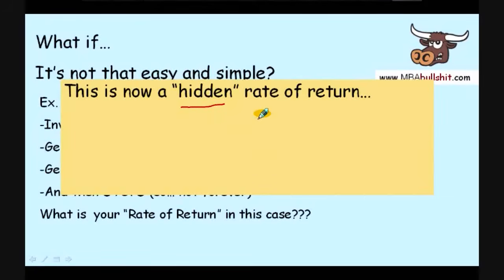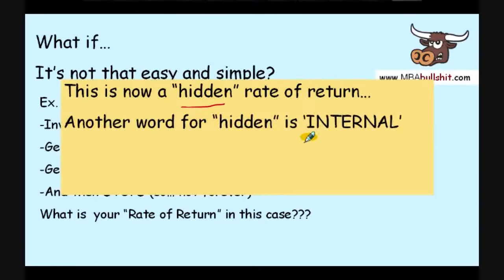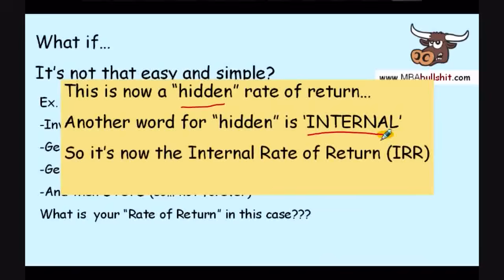In MBA bullshit or business bullshit language, another beautiful word for hidden is internal. So, the word hidden doesn't sound so beautiful. To make it sound more business-like, the authors or whoever changed it to the word internal. So, now we know or now we call it the internal rate of return or IRR, and that is the rate of return in this case.